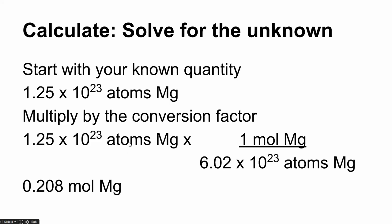So my atoms cancel, and then we do what we've done in the past. We multiply across the top and divide by the bottom. So in this case, I would multiply 1.25 times 10 to the 23rd times 1 and then divide by 6.02 times 10 to the 23rd. Remember that if you're putting this in a calculator, 6.02 times 10 to the 23rd needs to be in parentheses or you're going to get a bad number. When I do that, what I get is 0.208 moles of magnesium. Notice I started with three significant figures, so my answer can have three significant figures.